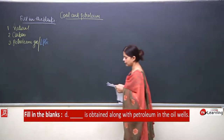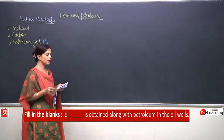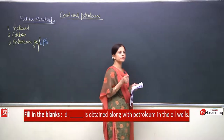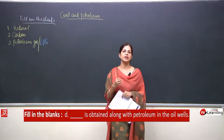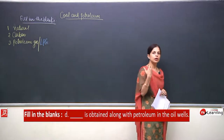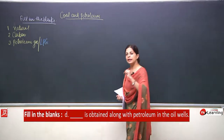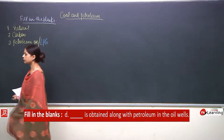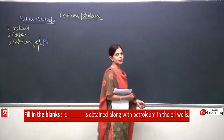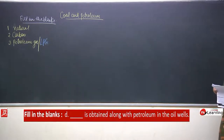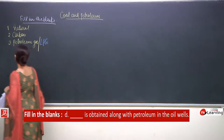The fourth one: dash is obtained along with petroleum in the oil wells. Natural gas can be obtained from oil wells — sometimes only natural gas is formed, and sometimes it comes out along with petroleum products also. So, what is obtained along with petroleum in oil wells? Natural gas.